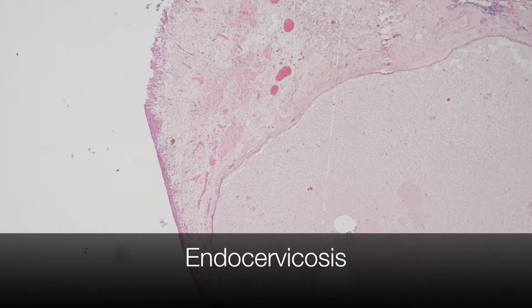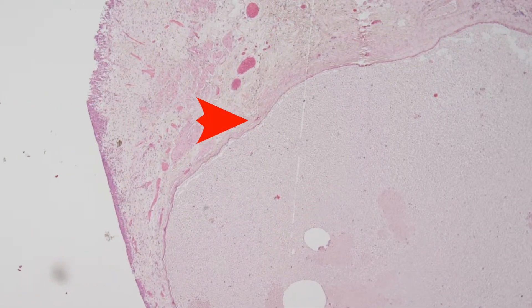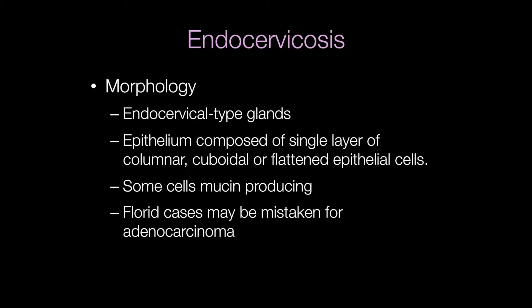This is a low-power view of a focus of endocervicosis in the bladder. As the name suggests, endocervicosis is composed of endocervical-type glands, and these are lined by epithelium composed of a single layer of columnar, cuboidal, or flattened epithelial cells, and some are mucin-producing.